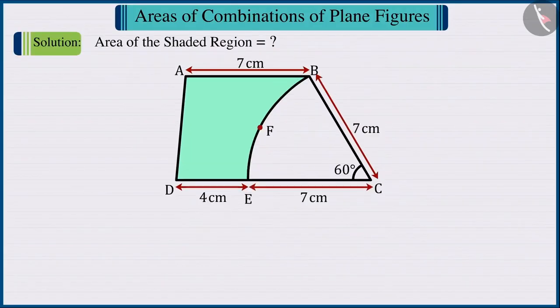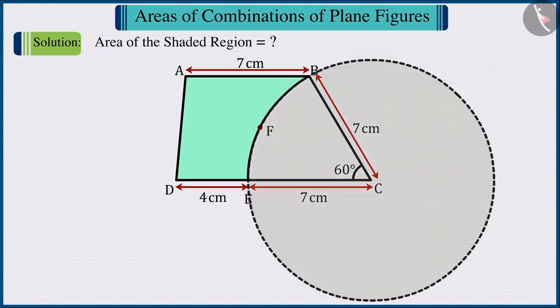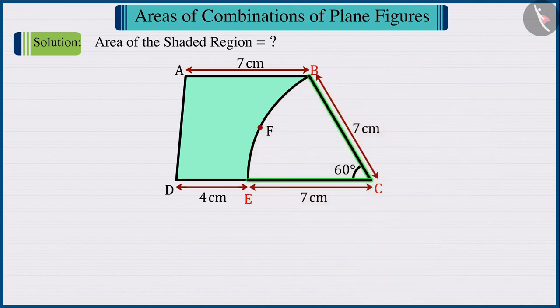From the figure here, we can see that CE will be equal to CB, because it represents the radii of the circle, the measure of which is 7 cm. Therefore, we can say that side CD will be equal to the sum of the measures of the sides CE and ED.